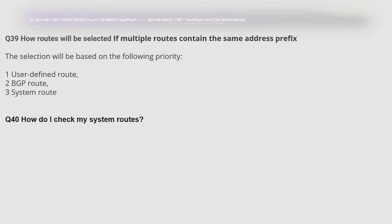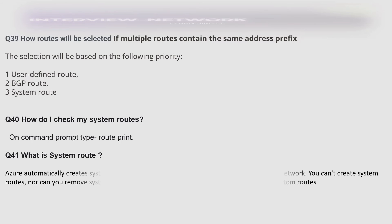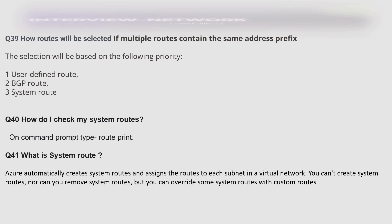How do I check my system routes? On the command prompt, type the 'route print' command. What is a system route? Azure automatically creates system routes and assigns the routes to each subnet in a virtual network. You can't create or remove system routes, but you can override some system routes with custom routes.